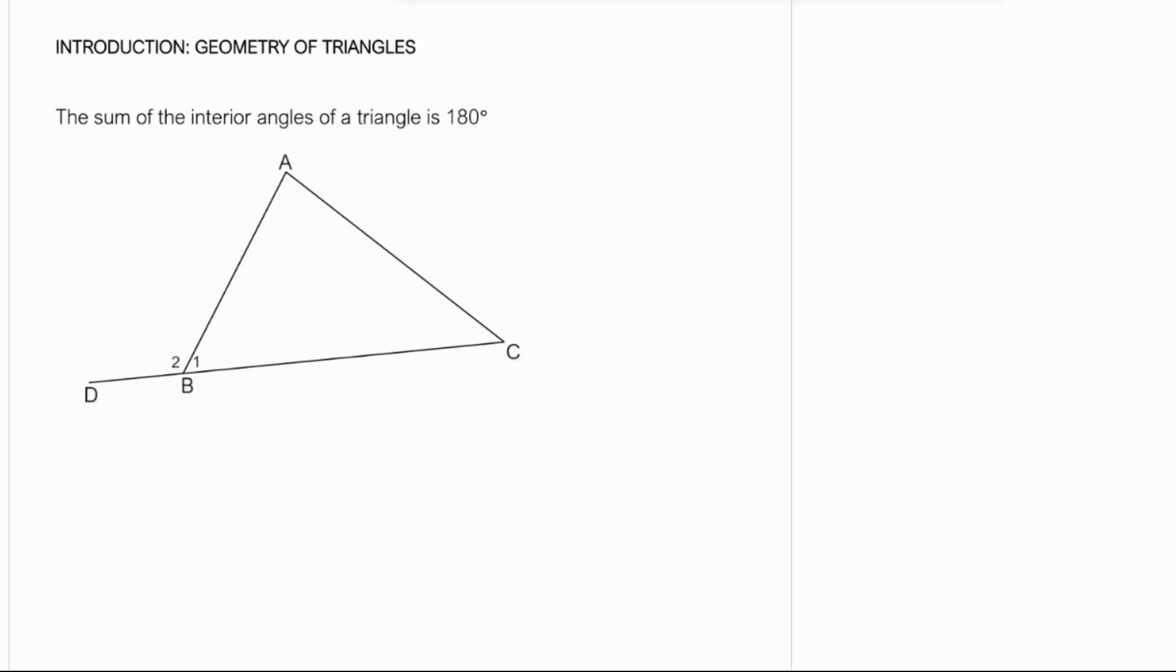Welcome back. Let's look at the properties of triangles or the theorems for triangles. The first one says that the sum of the interior angles of a triangle is 180 degrees.